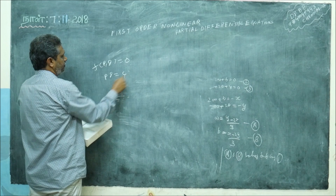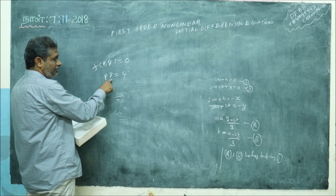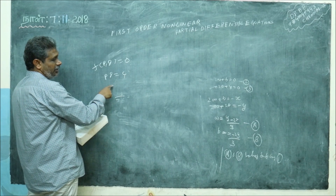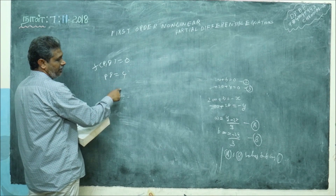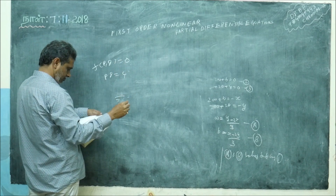For the exercise: p·q is equal to 4. So put p equal to a, then b is equal to 4 by a. Therefore z is equal to a·x plus (4/a)·y plus c.